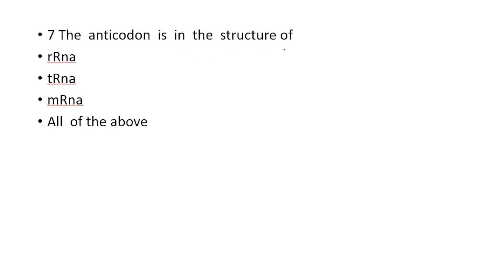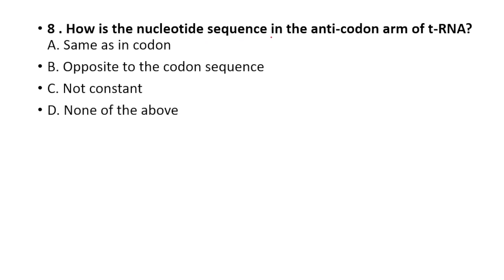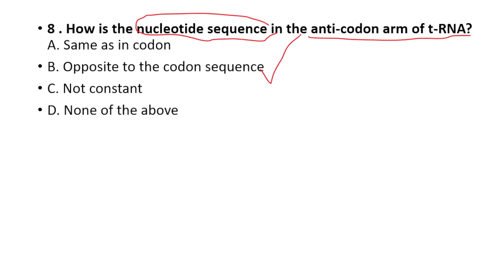The anticodon is a structure found in transfer RNA. How is the nucleotide sequence in the anticodon arm of tRNA? Option A: same as the codon. Option B: opposite to the codon sequence. The answer is Option B — the anticodon arm of tRNA is opposite to the codon sequence.